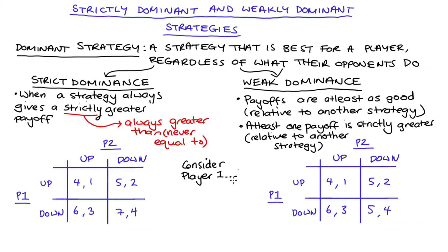Let's compare what's happening to player one across the two games on screen. Starting with the game on the left, we'll find player one's best responses. If player two plays up, we're on that column: player one could play up and get four, or down and get six. Six is bigger than four, so player one's best response to player two playing up is to play down. If player two plays down, player one could play up and get five or down and get seven — seven is bigger than five, so down is again player one's best response.